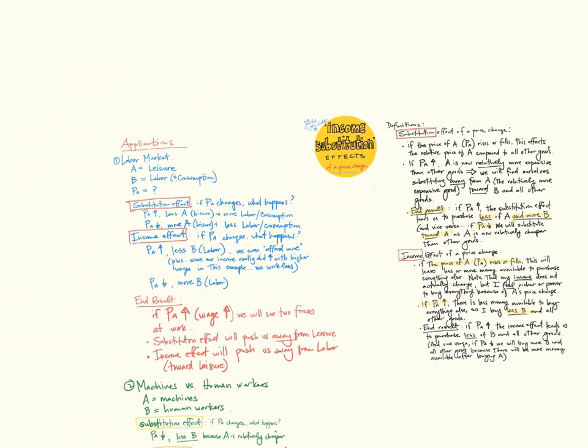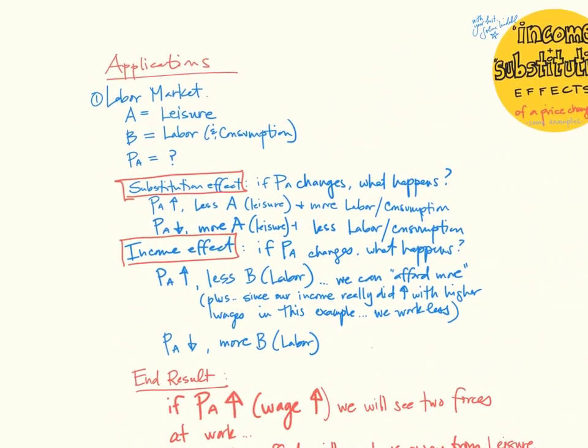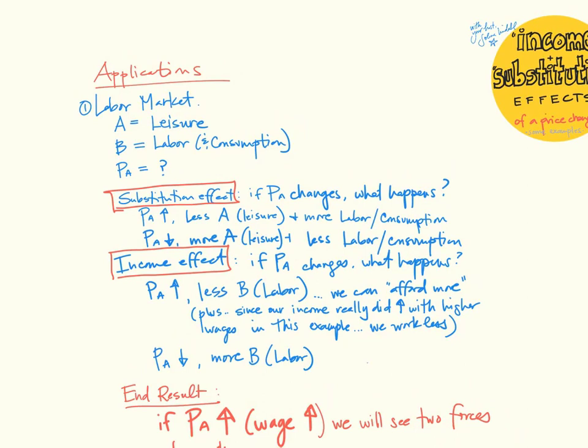Now let's move to some applications. So we've talked about the labor market, the backward bending labor supply curve, for instance. Thinking about workers, we want to think about them having a choice between working and not working, right?